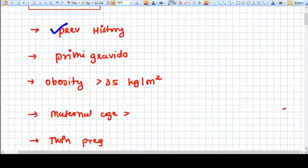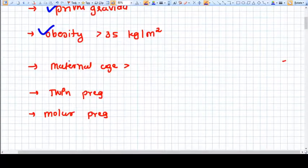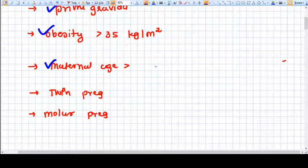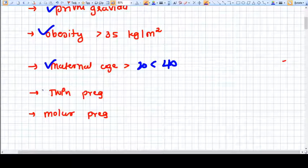The patient is primigravida, obese patients, maternal age either more than 40 or less than 20, twin pregnancy, triplets, quadruplets, and molar pregnancy are all risk factors.